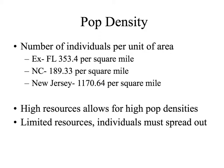Humans like to figure out population density, particularly for our own population. For example, you can look up the population density by state. Florida has a population density of approximately 353 people per square mile; North Carolina has 189 people per square mile; and New Jersey is the most dense state with 1,170 people per square mile. Remember, for population densities to be so high, there must be high resources allowing that many organisms to be in one area. If resources are limited, individuals must spread out to get what they need.